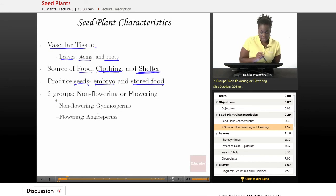A last characteristic that all seed plants have is that they are grouped according to whether or not they have flowers. Seed plants can either be non-flowering or flowering plants. Non-flowering plants are called gymnosperms. Flowering plants are called angiosperms.